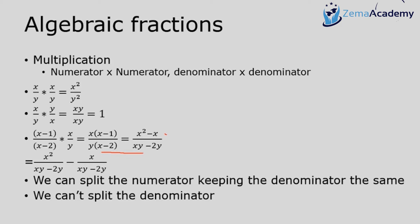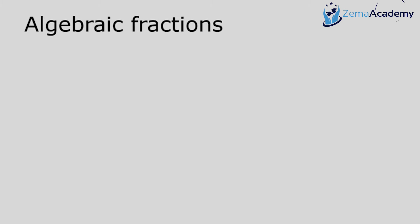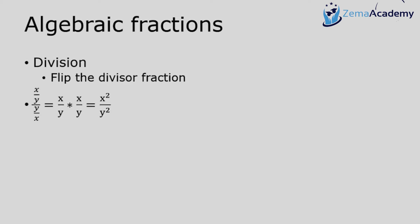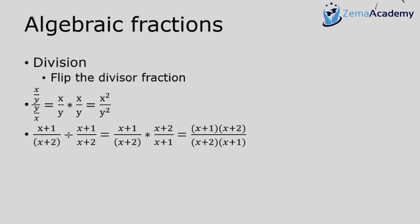For division, we use the same operation as multiplication, but first we flip the divisor fraction. For example, x over y divided by y over x: I flip the second fraction, giving x over y times x over y, which equals x squared over y squared.